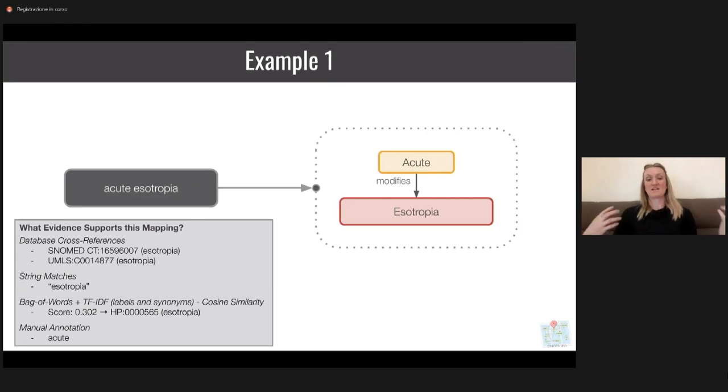But we also need to have acute, and to do this we need to say that acute is modifying the concept of esotropia. Within the OMOP to OBO framework, we want to give you mapping evidence so as a user of these mappings you can determine how useful they might be. In this case, we have database cross-references on the OMOP side that align to different cross-references on the OBO foundry ontology side. We're looking at the HPO. We have concepts that align on the SNOMED concept and also on a UMLS CUI. We also have string matches to one part of this mapping, an exact map to the concept esotropia. We also use things like bag of words and embedding models. There's some manual curation required which covers acute. When I say we track provenance, we're tracking every bit of the evidence that led us from starting with a concept, in this case acute esotropia, to ending with two HPO concepts: acute, which modifies the original concept esotropia.